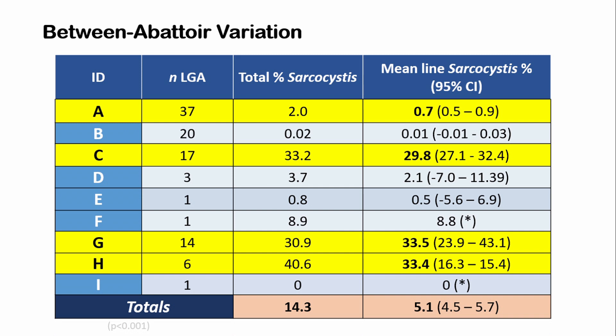Over half the population was slaughtered at abattoir A. The mean line sarcocystis prevalence — the predicted prevalence if you were assessed at a particular abattoir — varies dramatically. At abattoir A, you've got 0.7%. Comparing that to abattoirs C, G, and H, you can very clearly see that if assessed at those abattoirs, you were much more likely to have a higher line prevalence of sarcocystis — up to 40%.